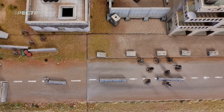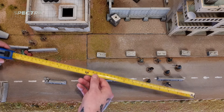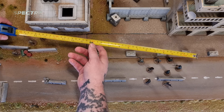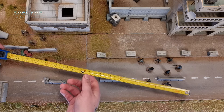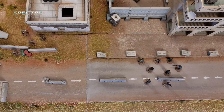First we need to make sure that the target element is in range. The entire target element is in the engagement range of 20 inches for the medium rifles that the tier 2 element are equipped with. At this range they get a plus one to accurate fire as their modifier, which we will apply to the dice roll.